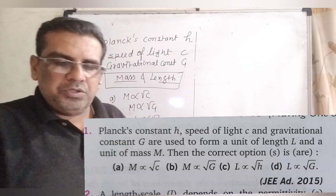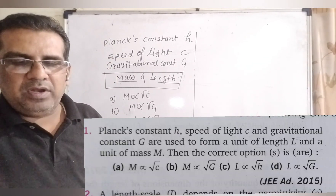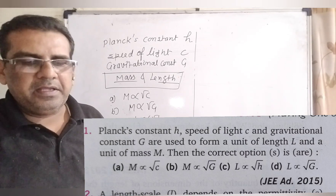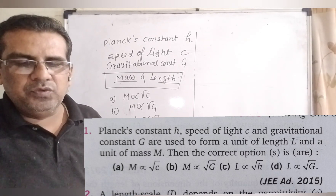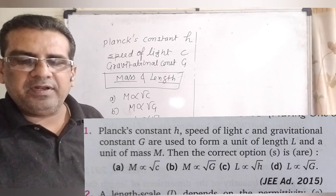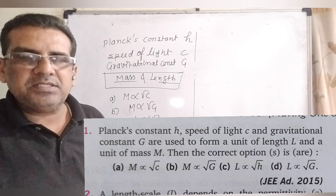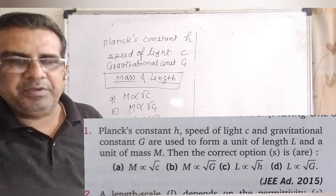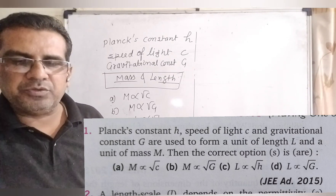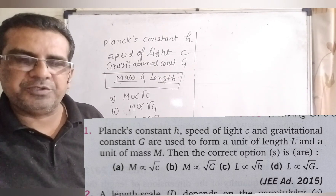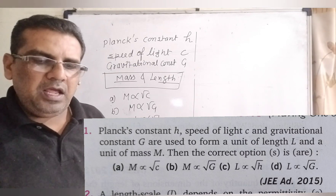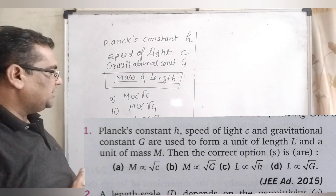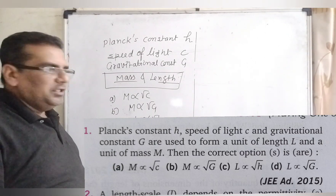Here is the question. Planck's constant h, speed of light c, and the gravitational constant G are used to form a unit of length L and a unit of mass M. Then the correct options — this may be a multiple choice question. The options are: A) M proportional to root c, B) M proportional to root G, C) L proportional to root h, D) L proportional to root G.